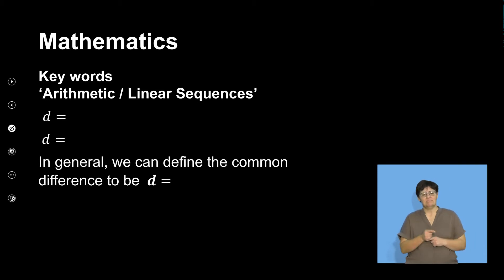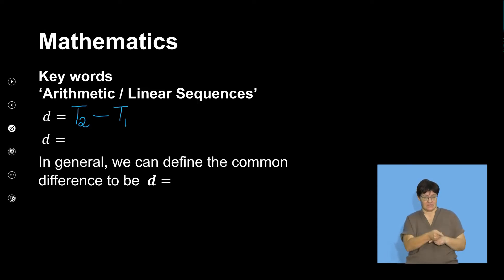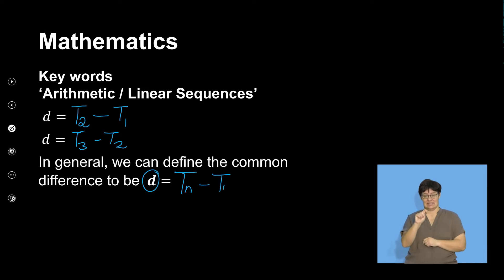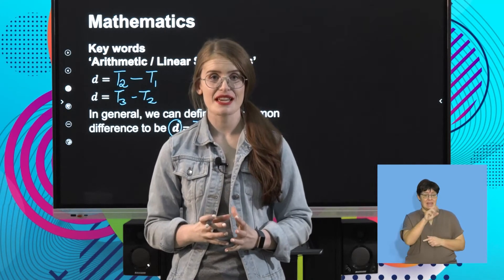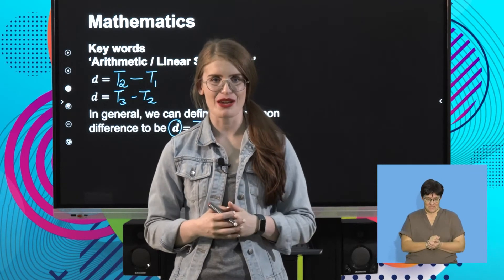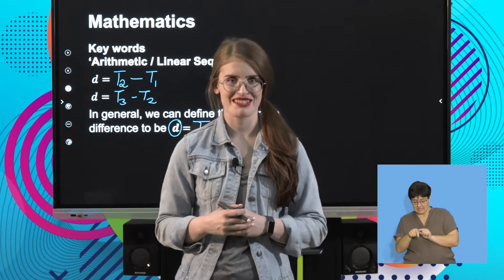We've discussed that a common difference is present in arithmetic and linear sequences. The main way we calculate it is: d equals term 2 minus term 1, and we check by doing term 3 minus term 2. In general, the common difference d is equal to Tn minus T(n minus 1). This means the common difference can be calculated by taking the value of a term and subtracting the value of the term that comes before it.